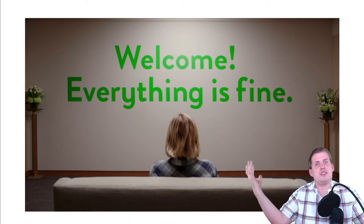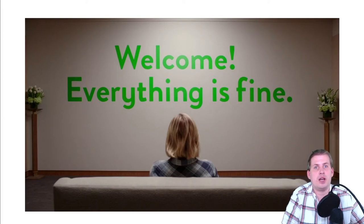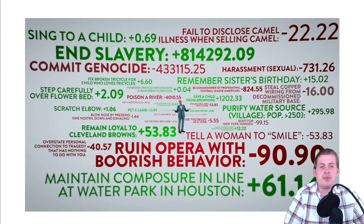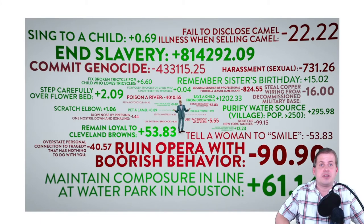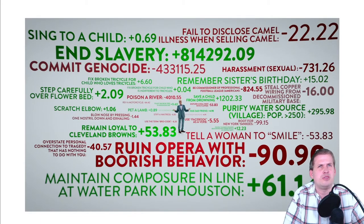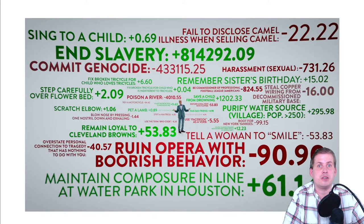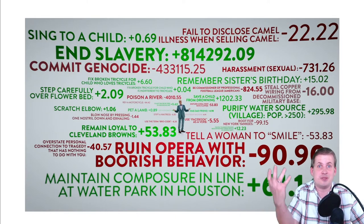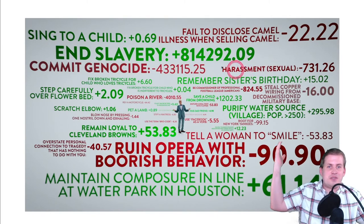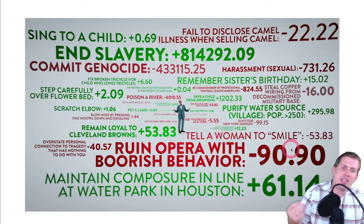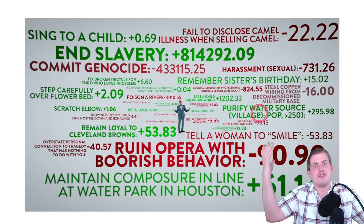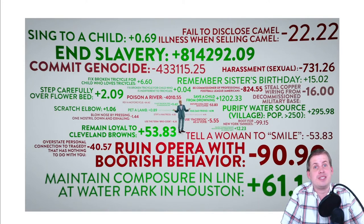The premise of The Good Place is that it's about the afterlife — people on earth die and go to either the good place or the bad place based on a point system. In the very first episode they outline the point system: if you do specific things during your life you gain positive or negative points. Based on your total point value when you die, if it's above some threshold you go to the good place — it's a good regression discontinuity.